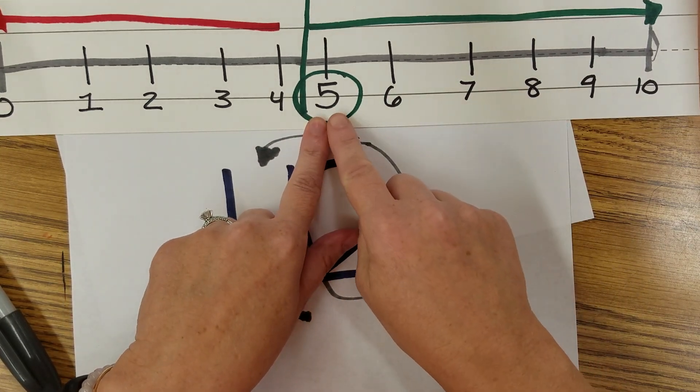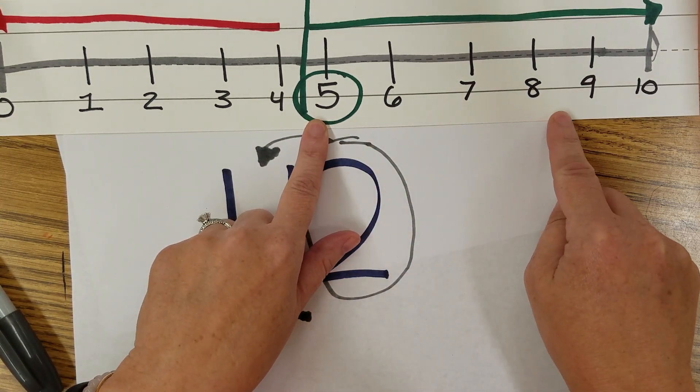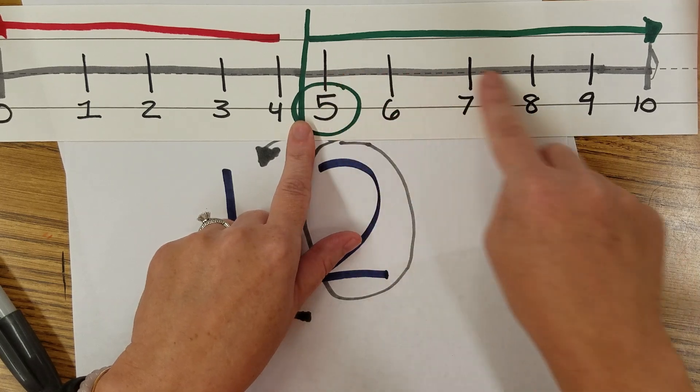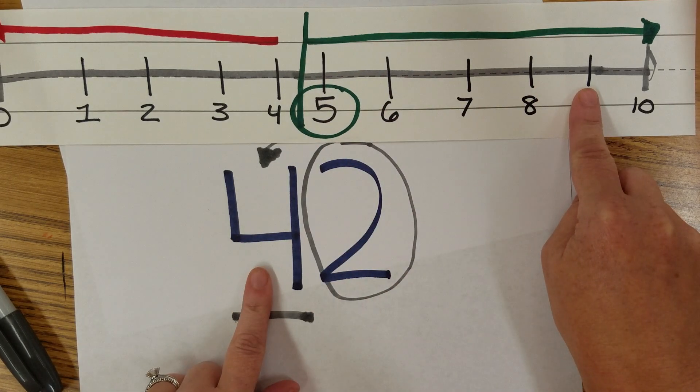If the one in the ones place value is five, six, seven, eight, or nine, it's going to tell you to go ahead to the next ten.